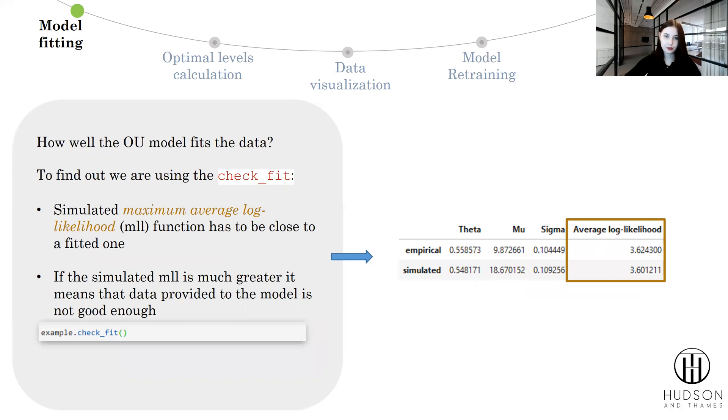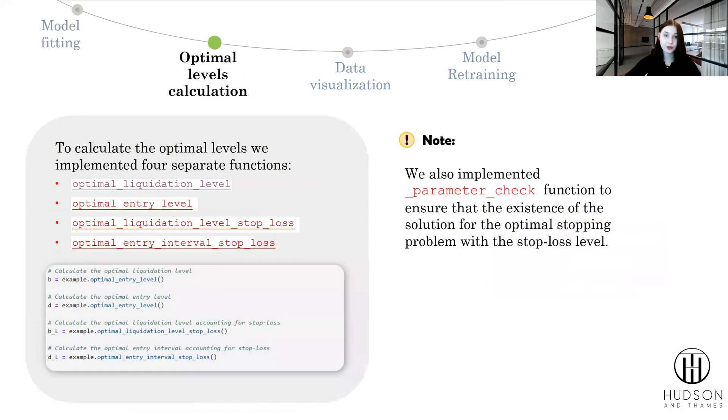However, let's continue to the optimal level calculation. To calculate the optimal levels, we've implemented four separate functions: optimal liquidation level, optimal entry level, optimal liquidation level with the stop loss, and optimal entry interval with stop loss. We can call all of these functions by themselves.